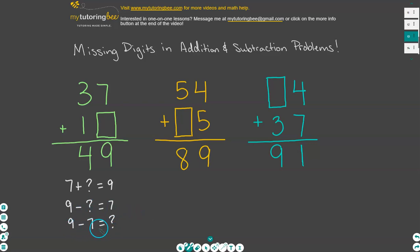7 plus something equals 9, or 9 minus something equals 7, or even 9 minus 7 equals that missing number. So this might be a great way to solve this particular problem, and think of what is 9 minus 7. Well, that's 2. We can plug that in. And now we can see that 7 plus 2 does equal 9. And you always do want to check all of your place values, and so we're going to go over here to the 10's place. 3 plus 1 does equal 4. So we know that our missing number is 2 there.